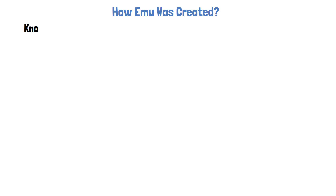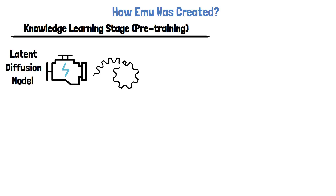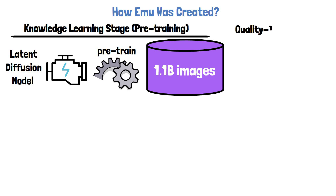EMU was created in two stages. The first is called the knowledge learning stage, or pre-training stage. In this stage we take a latent diffusion model and train it on a large meta-internal dataset of 1.1 billion images. By the end of this step the model is capable of generating images for diverse domains and styles, including highly aesthetic images. However, the generation process is not properly guided to always generate highly aesthetic images, so it may not be consistent when trying to do so.